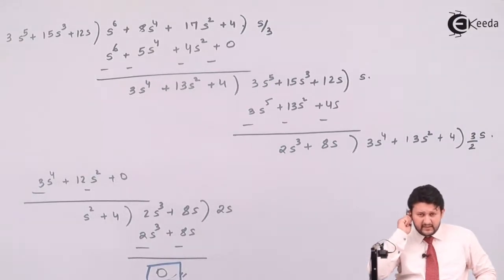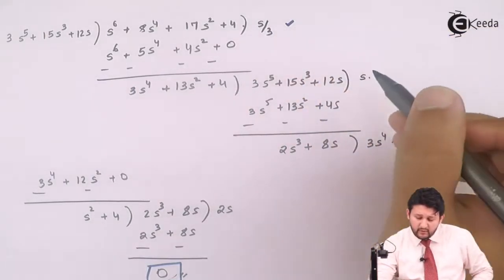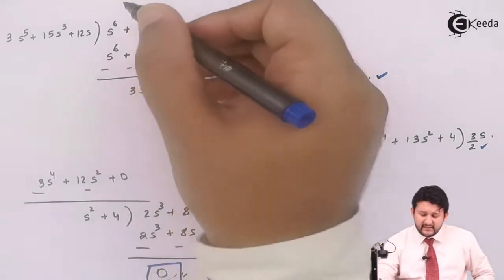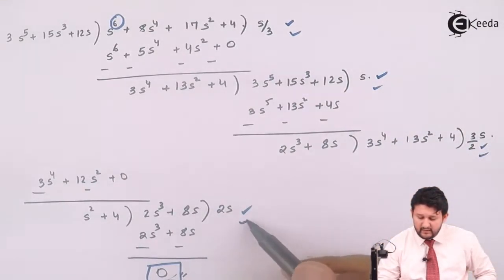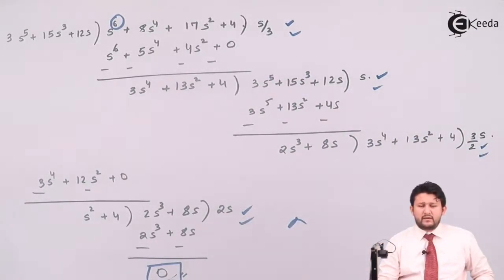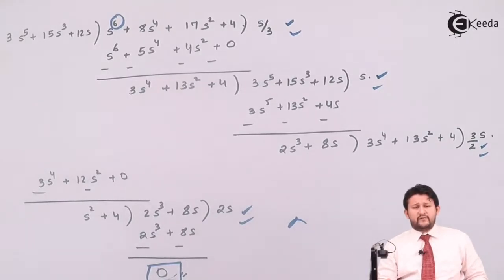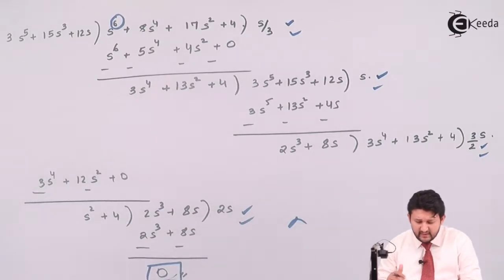So we got remainder 0. Now check: all coefficients positive — positive, positive, positive, positive. What was the highest power? 6. So the count should be 1, 2, 3, 4 — wrong. The power should reach 0 at the end, so we have to solve it much further.